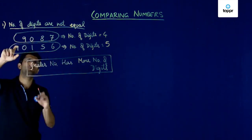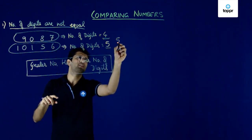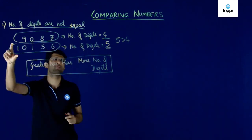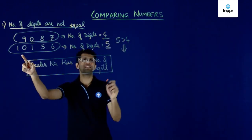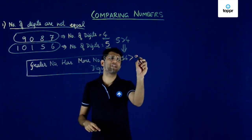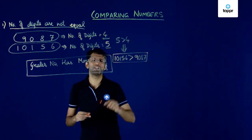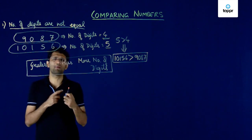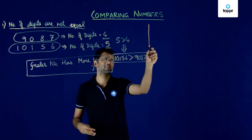In our specific case, the first number had 4 digits and the second number had 5 digits. Because 5 is greater than 4, the number with more digits is greater. So 10156 is greater than 9087. Whenever we compare two numbers with unequal number of digits, the number with the larger number of digits is always the greater number.